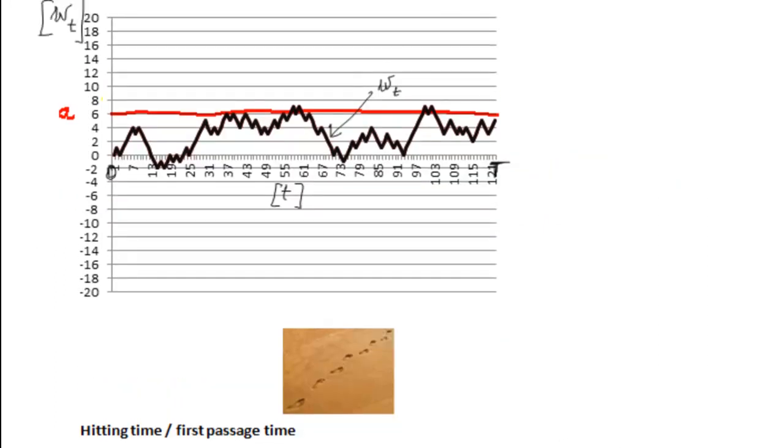So on this graph you can see a process which fluctuates up and down. It's a random process and you've got some level A here. Let's call it a barrier A. And the question is, for instance here,